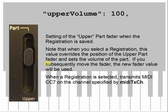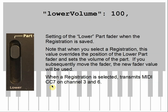Upper volume is the setting of the upper part fader when you save the registration. If you select a registration, the value here overrides the position of the upper part fader — so even with the fader all the way down, you could get full volume. Once you move the fader, it takes over, but the piano has to see the fader move. When you select the registration, this value is sent on CC7. Lower volume works the same way for the lower part of a split or the second part of a dual, sending CC7 on channel 3.